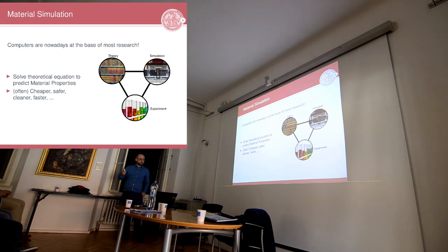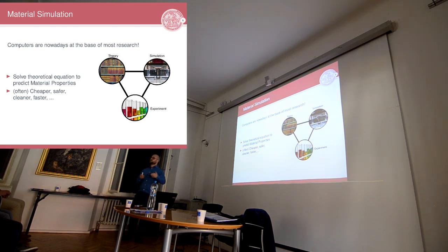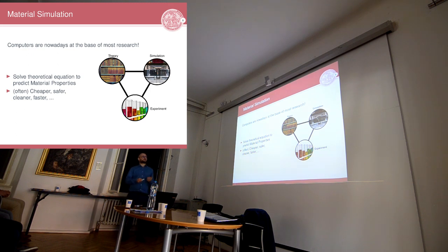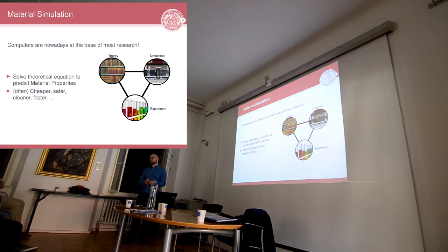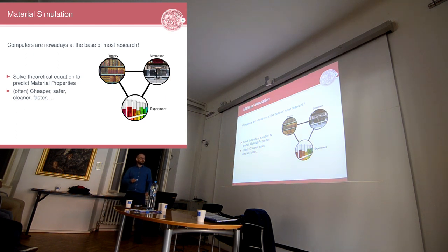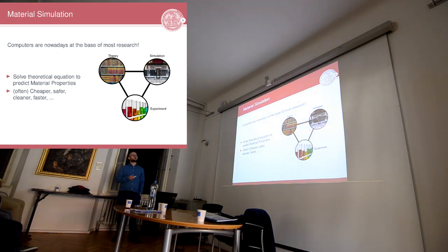Then, with the first scientific revolution, we started using mathematics to model nature and began building theories. For many years — up to roughly the 1920s or 1940s — science was mostly divided between experimental science and theoretical science, with some communication between them. Then there was a slow transition between the 1930s and the 1960s where theoreticians were also doing simulations — putting numbers into equations and trying to see the results.